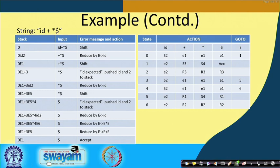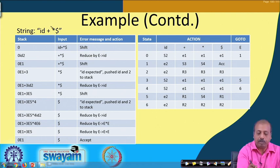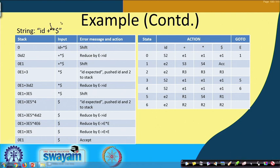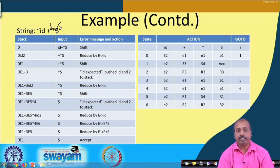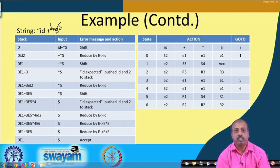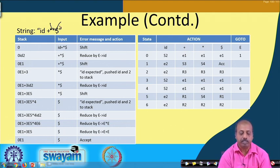Next we will look into an example of how errors can be detected and recovery can take place. Suppose we have an input string which is 'id plus star'. Definitely you can understand that there is an error at this place, and after the star we have another error. At both places some identifier is expected, and let us see how the parsing process can detect this situation.